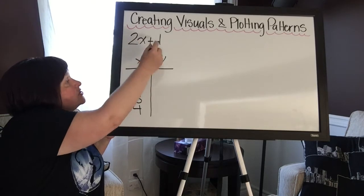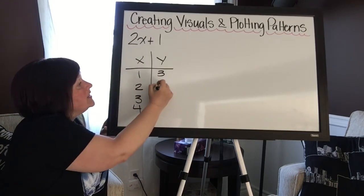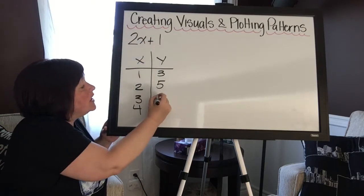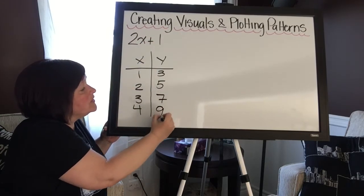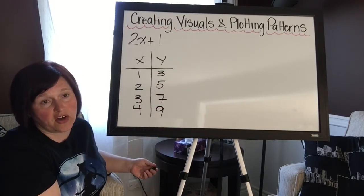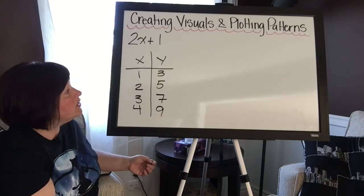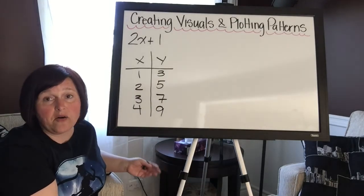One times two plus one is three. Two times two plus one is five. Three times two plus one is seven, and we know the next one is nine. In fact, once you've got the first two and you know what your common difference is, you can just boogie on through this. So y tells me how many of a shape needs to be within the picture.